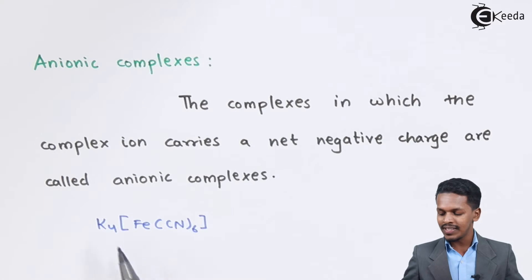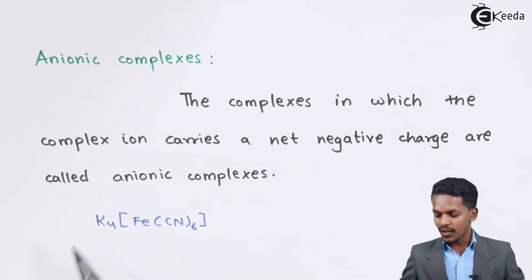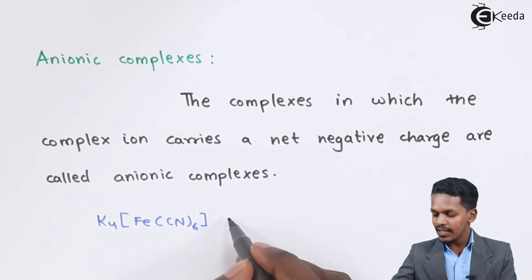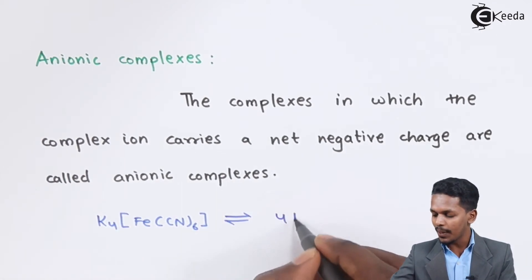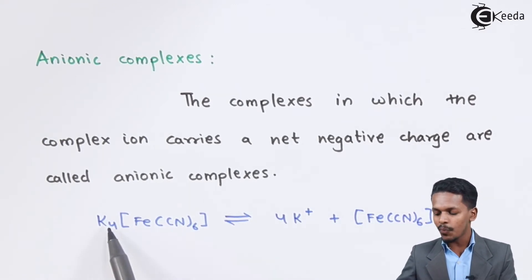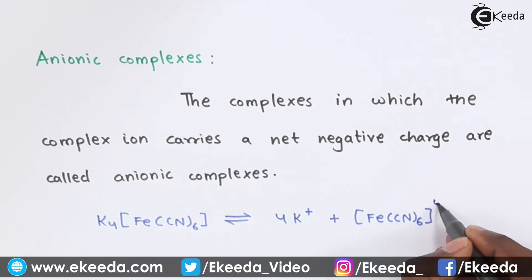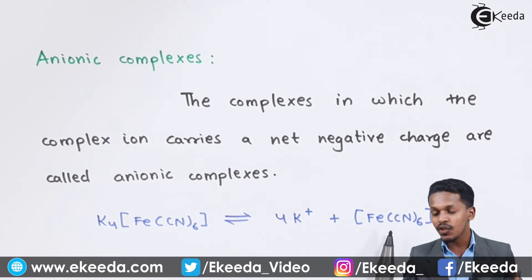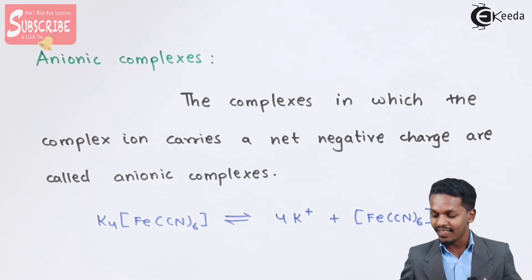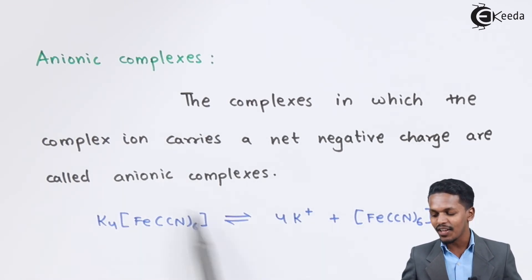In K₄[Fe(CN)₆], the potassium ions are in the primary sphere while cyanide ligands are in the secondary entity. When dissociated, it forms four K⁺ ions along with the complex [Fe(CN)₆]⁴⁻. Since four moles of K⁺ carry four positive charges, the complex iron must acquire four negative charges to balance, making it an anionic complex.